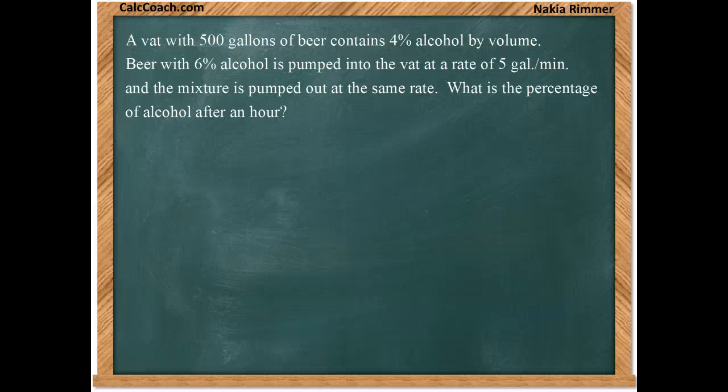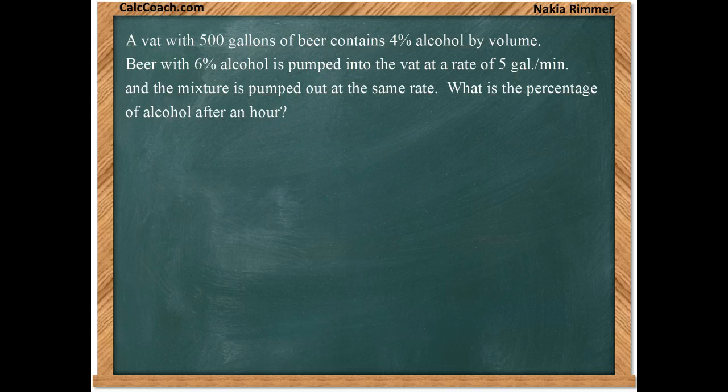A vat with 500 gallons of beer contains 4% alcohol by volume. Beer with 6% alcohol is pumped into the vat at a rate of 5 gallons per minute, and the mixture is pumped out at the same rate. What is the percentage of alcohol after an hour?